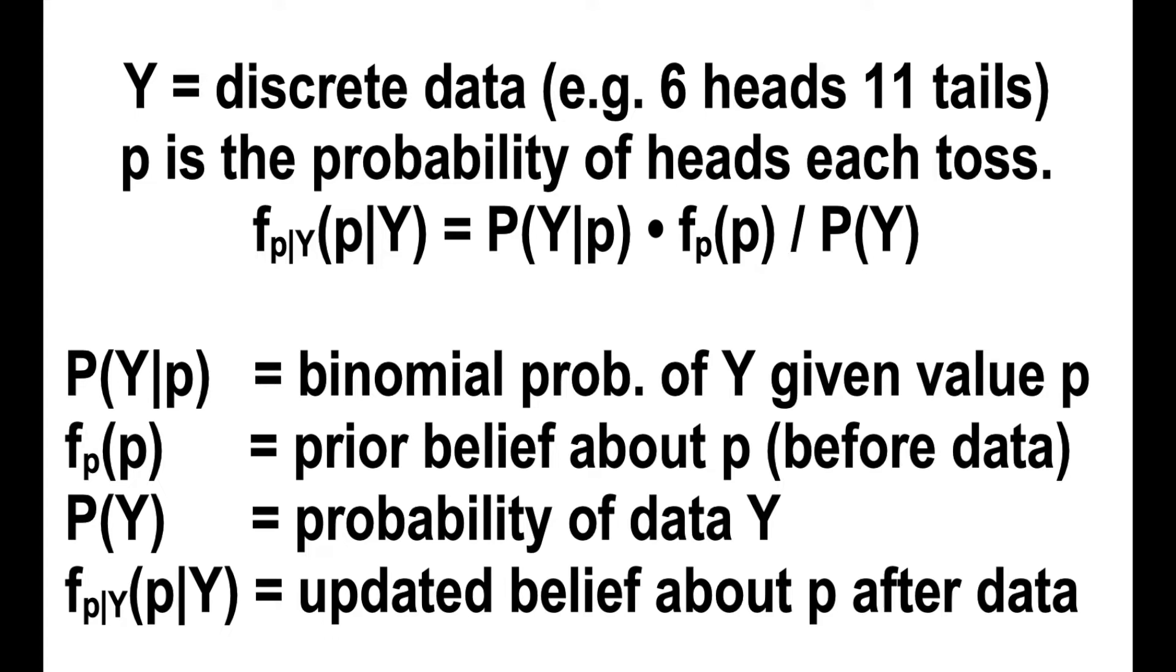It turns out that if f of p is described with a beta distribution, then f of p given Y will also be described with a beta distribution. So we say that the beta distribution is conjugate for the binomial.